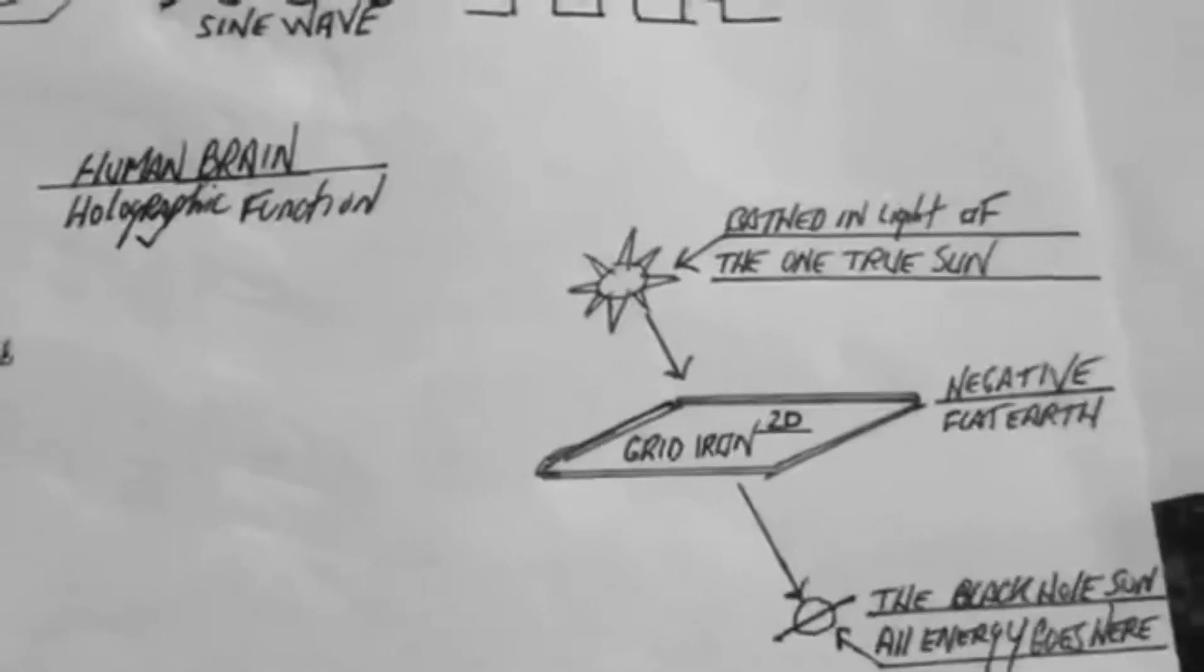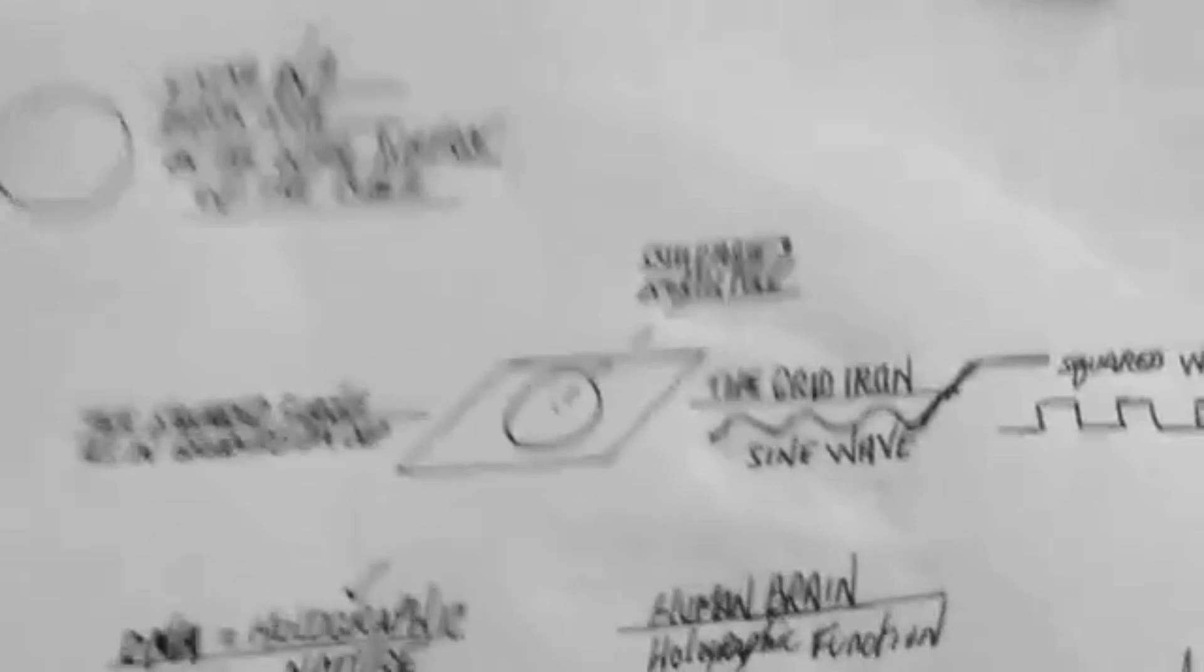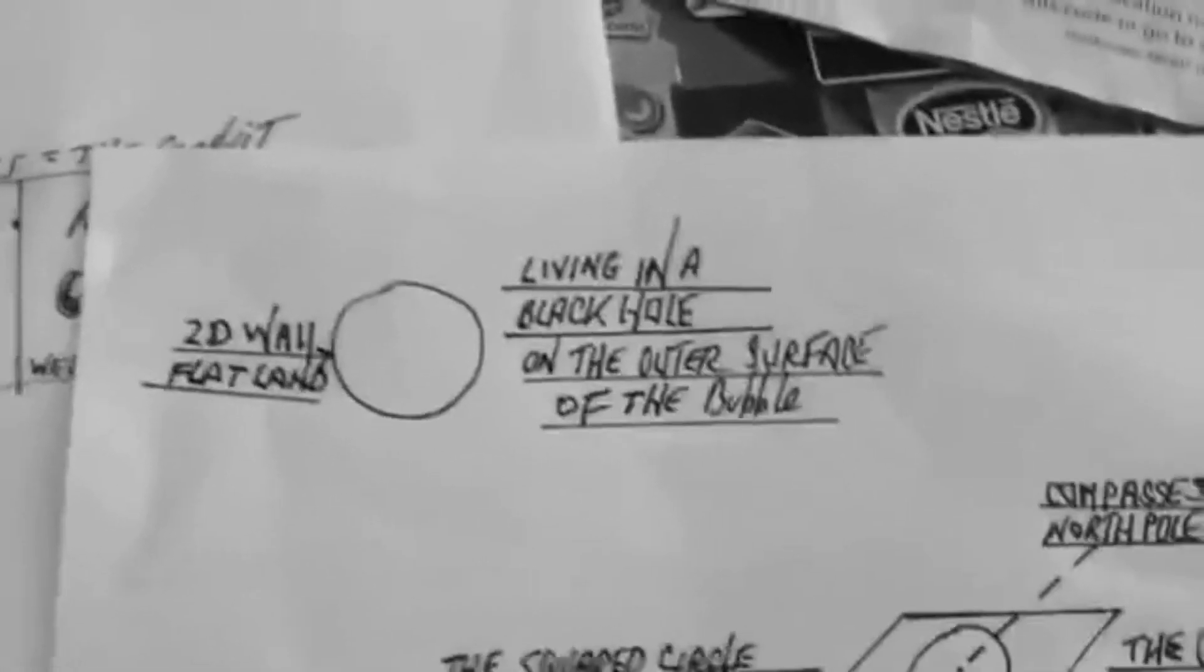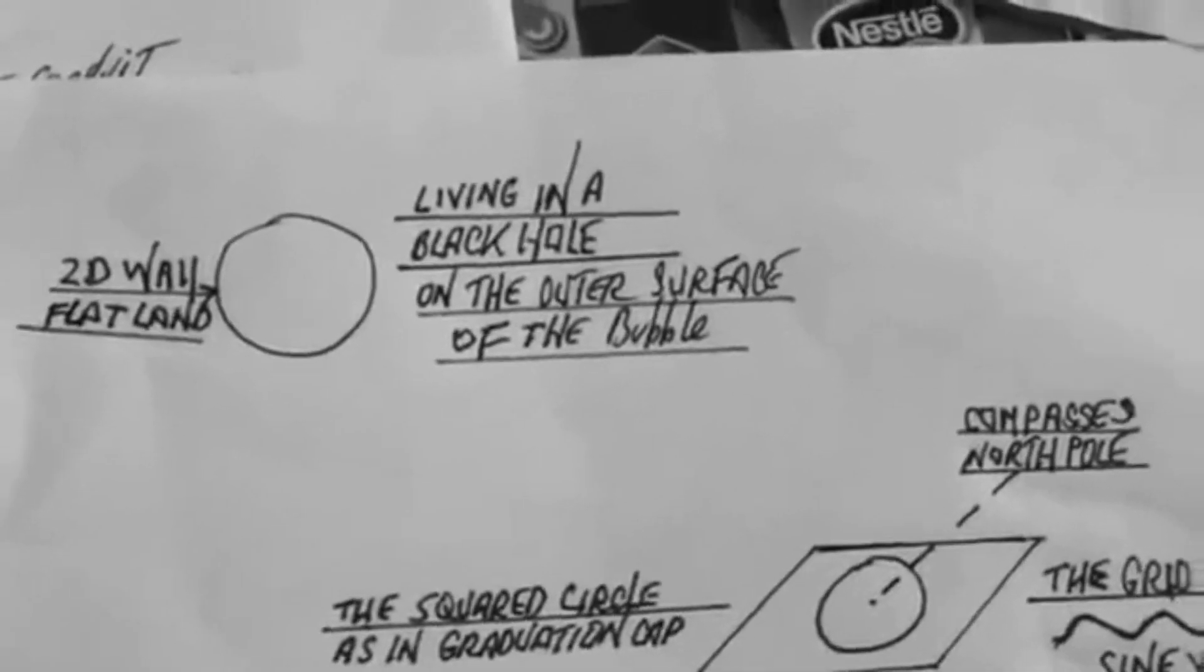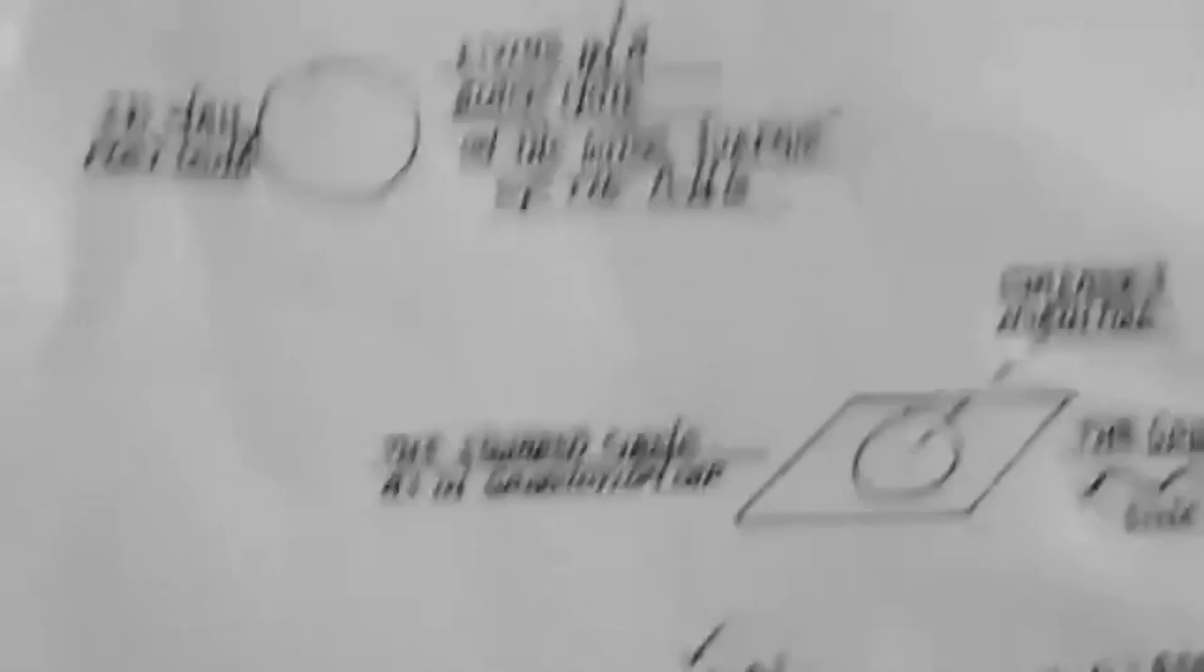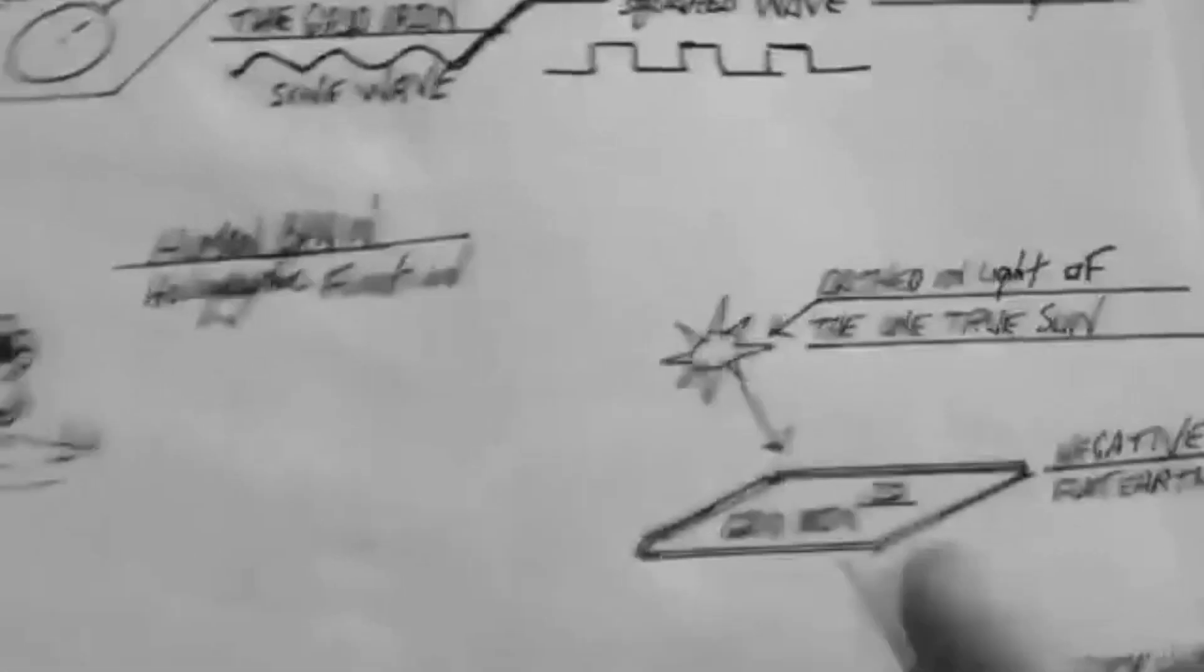And you're worshiping a word, whether it be Jesus, which is little Zeus, which is Saturn. You're worshiping the black hole sun, which has enslaved you. You're trapped in this. Look, it can be a manufactured black hole that keeps us trapped in here on this iron grid.